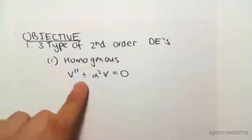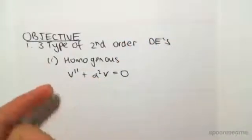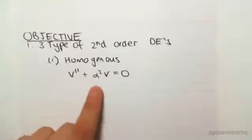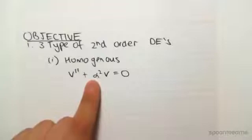Okay, so this is like similar to y double dash plus the constant, y equals zero, except I'm just using v. So that's why it's second-order, it's the second derivative, and this is what we call a second-order differential equation.